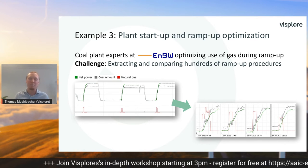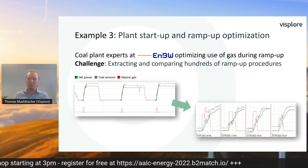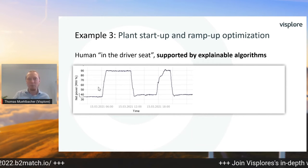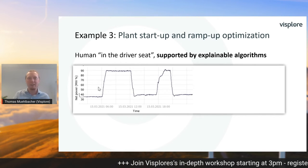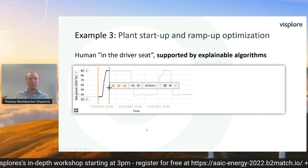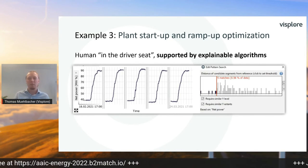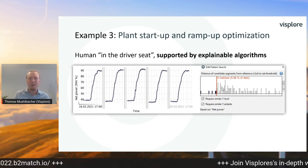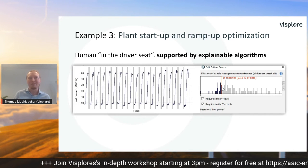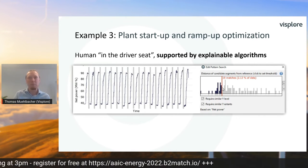But even for such cases, we can use explainable algorithms to assist the human task. The user selects one ramp-up example and then similar patterns are searched automatically — like these five ramp-ups here. The question is: what is similar enough? This interface supports the user in selecting the right threshold. The algorithm assists and guides the segmentation of this data, and then the user can overlay all of these ramp-ups and compute KPIs and so on.